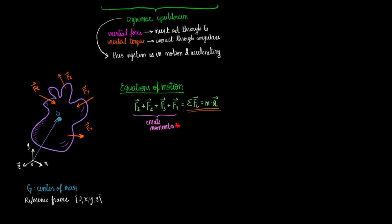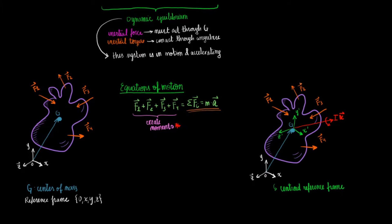These external forces will be creating moments. We can set another reference frame in the body where the center of mass is the origin. We will call that a centroid reference frame. From the center of mass, we can draw the inertia moment i times alpha, the moment of inertia times the angular acceleration.